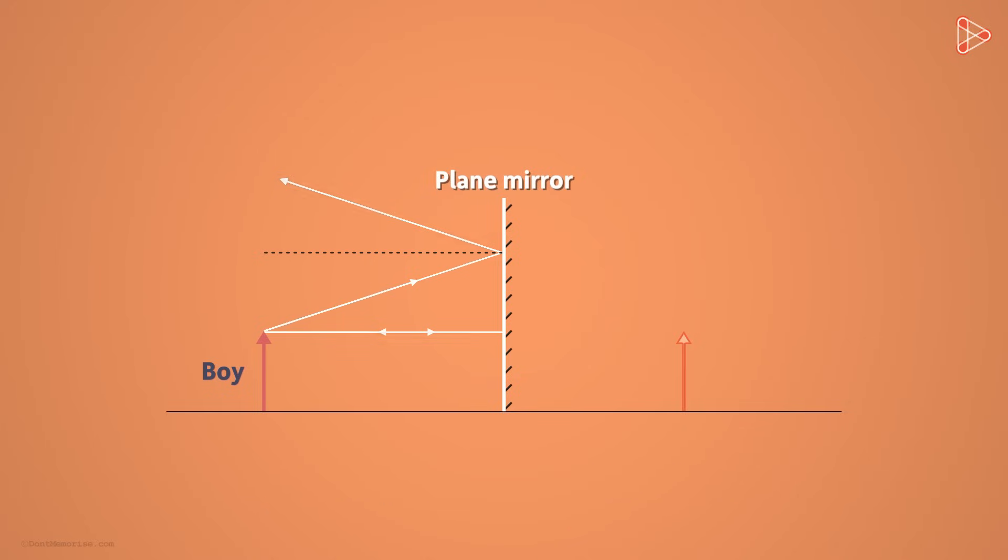So let me extend these reflected rays backwards and see what happens. We see that they meet at this point, behind the mirror. And to us, this is where the top of the image appears to be.